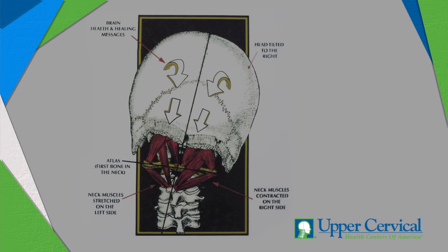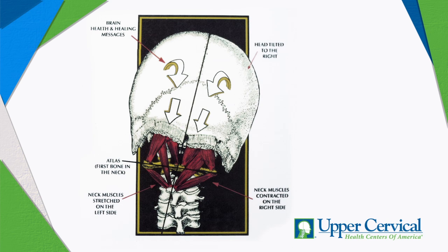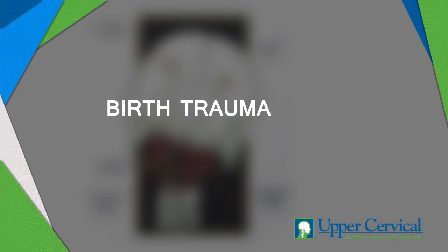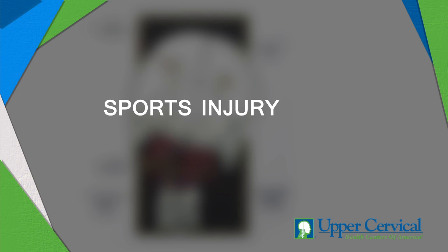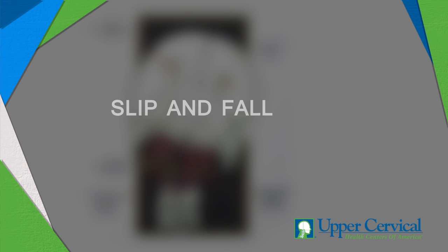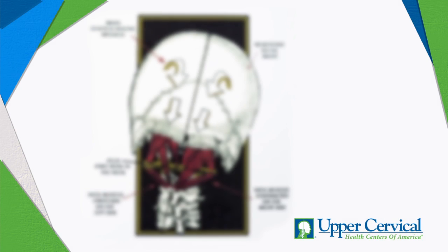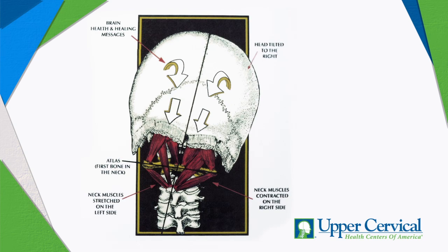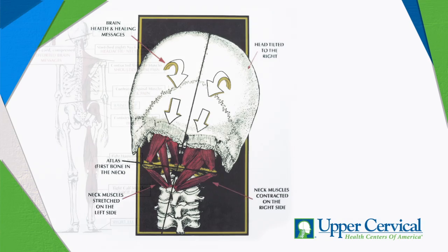Your head and neck relationship becomes imbalanced, usually due to trauma. That can be a birth trauma, a car accident, a sports injury, a skiing accident, or any minor slip and fall. When this happens, your brain sends messages to the rest of your body to right itself because the head and neck relationship has been imbalanced from that trauma.